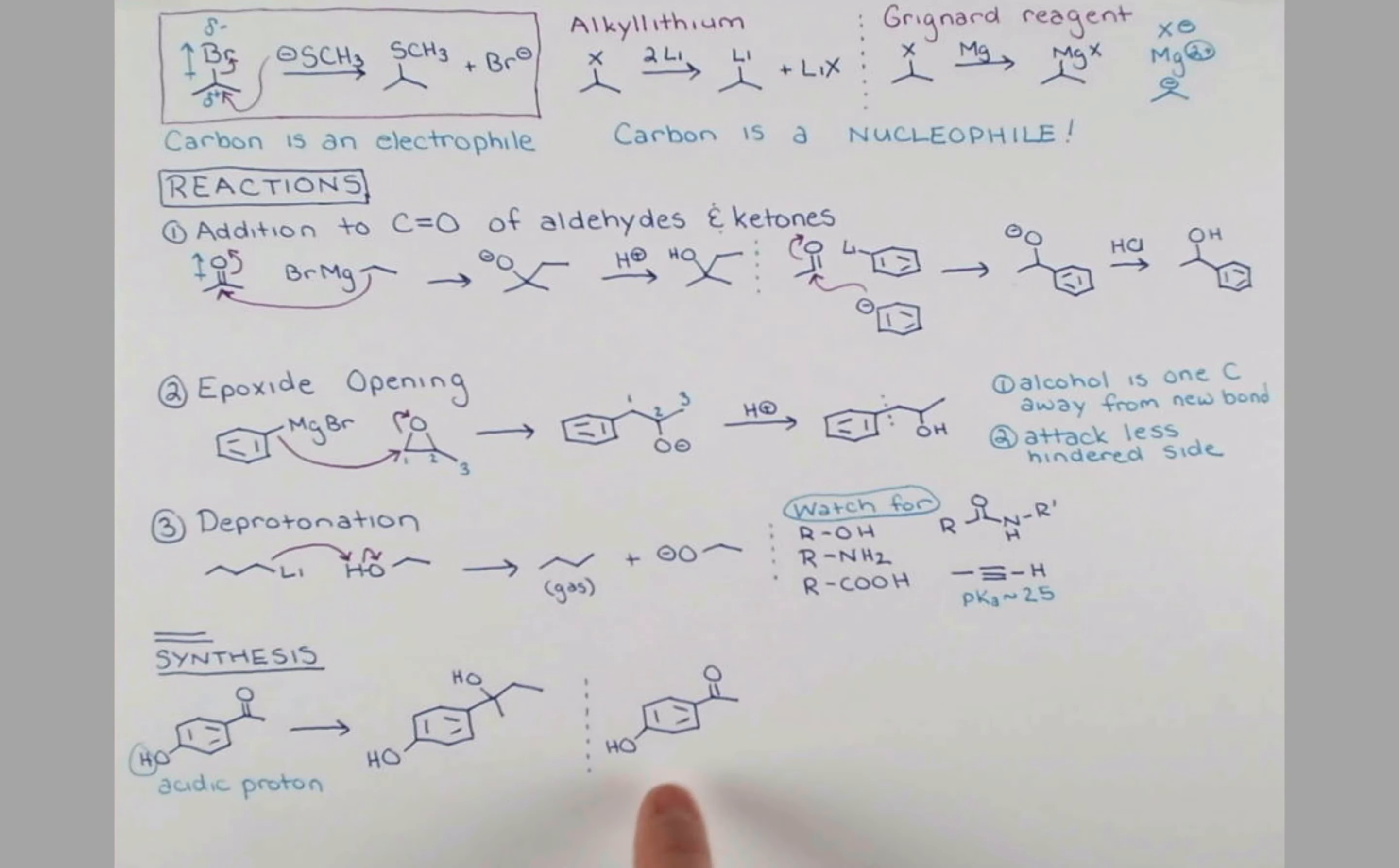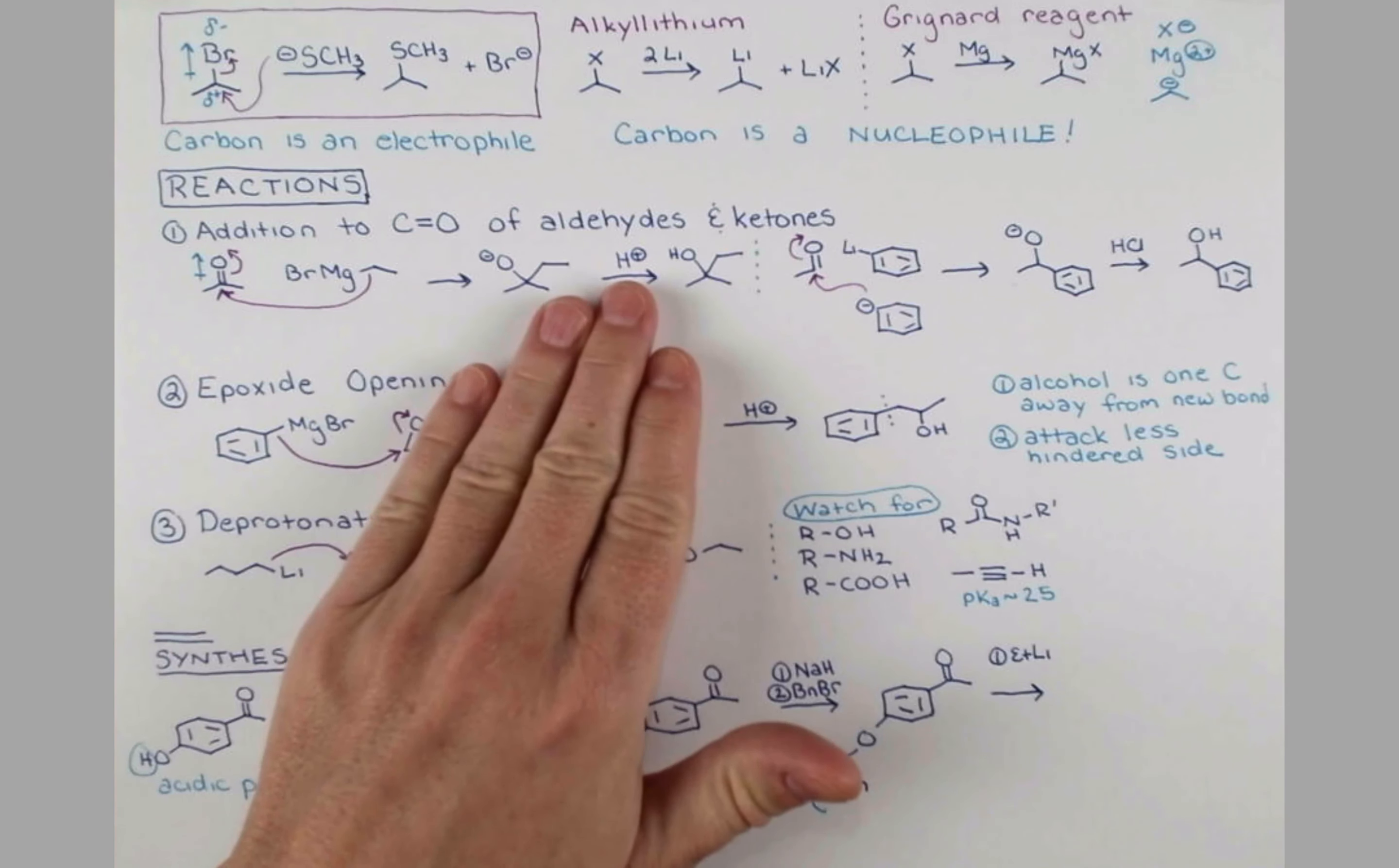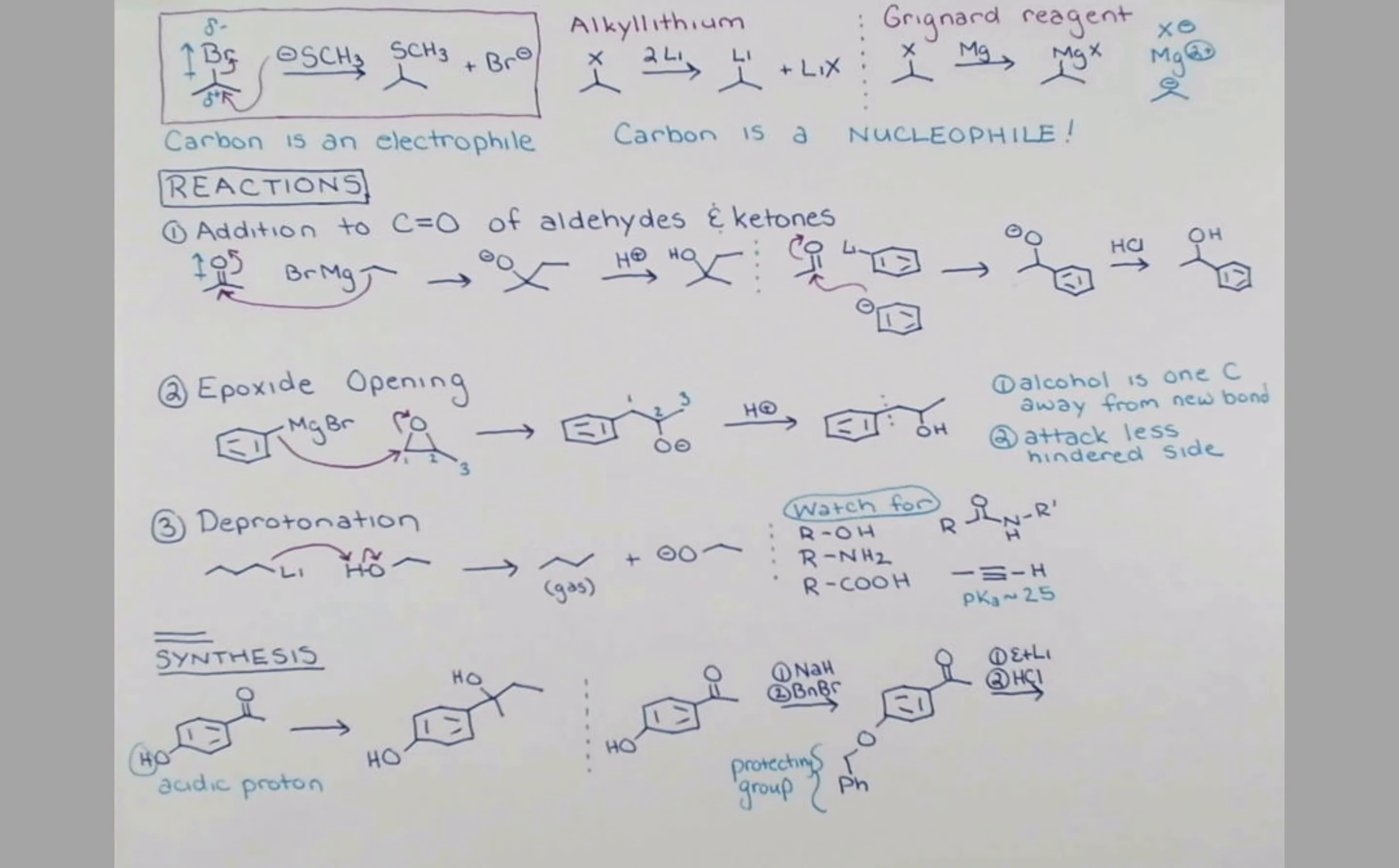What we can do is use a protecting group that will remove the acidic proton here. Then we can react this group, and then remove the protecting group off of the alcohol. An example of a protecting group that's useful in this particular situation is the benzyl group. We can first add in sodium hydride, which will deprotonate the alcohol, producing the phenoxide, an alkoxide on a phenyl ring. Then that will attack benzyl bromide in an SN2 reaction, and we'll get this compound. So benzyl is this CH2 phenyl, so this piece right here is our protecting group. This no longer contains an acidic proton, so now we can treat the compound with ethyl lithium, and then acid in a second step to protonate the alkoxide, which will give us this compound.